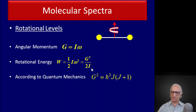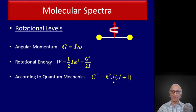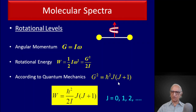Now according to quantum mechanics, the square of the angular momentum of a molecule is equal to h-bar squared — where h-bar is h divided by 2 pi, and h is Planck's constant — multiplied by j(j+1), where j is known as the angular momentum quantum number and can take on values 0, 1, 2, 3, and so on.